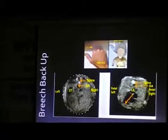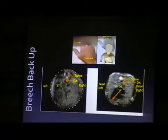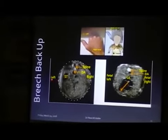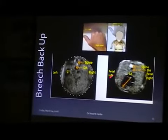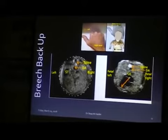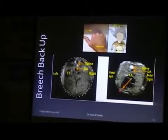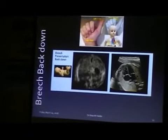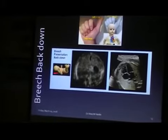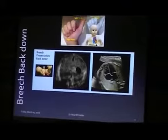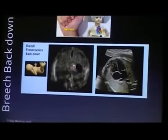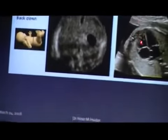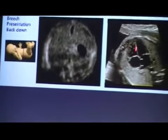If the fetus is in this position and back is up, then we will find this type of abdominal circumference, and the stomach indicates it is the left side of the fetus, and the position of the heart is here. If the fetus is in the breech presentation and the fetus is supine with the back down, then we will get the stomach here, and this indicates it is the left side, and the heart — the apex of the heart is on the left side — and we will get this type of picture.